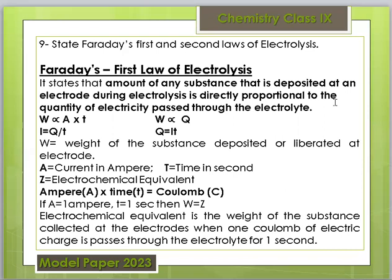If we pass more current, the ionic substance deposited will be more; if we pass less current, the deposit will be less. In the equation, the weight W is directly proportional to A (current) multiplied by time. We can say that W is directly proportional to Q, where Q is the quantity of current.